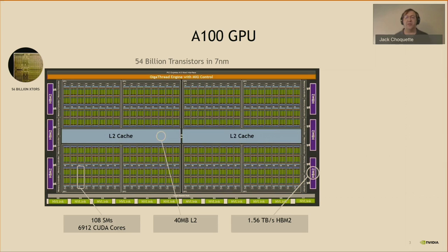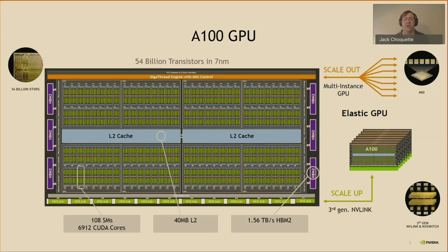Fabricated on TSMC's 7nm process, the A100 includes 54 billion transistors. It has 108 SMs with over 6,900 CUDA cores, 40 megabytes of L2 cache, and 1.6 terabytes per second of HBM2 memory bandwidth. A100's new elastic GPU features include multi-instance GPU and process isolation, allowing it to scale out by securely partitioning into as many as seven separate GPU instances. A100 also scales up with enhanced multi-GPU communication, including third-generation NVLink and NVSwitch inter-GPU communications.